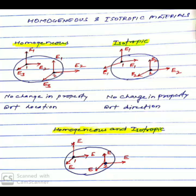Here we are going to discuss homogeneous and isotropic materials. It is a very important concept for solid mechanics, as it is a common assumption in solid mechanics that materials are homogeneous and isotropic, and most of the formulas are applicable for such materials.